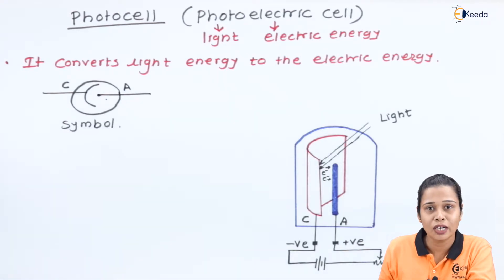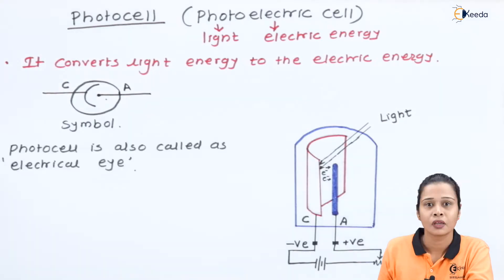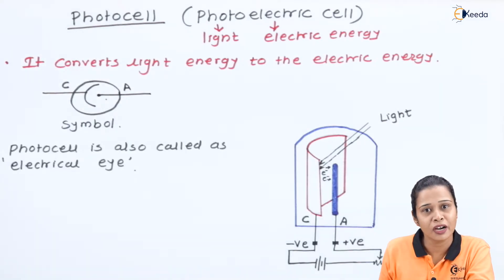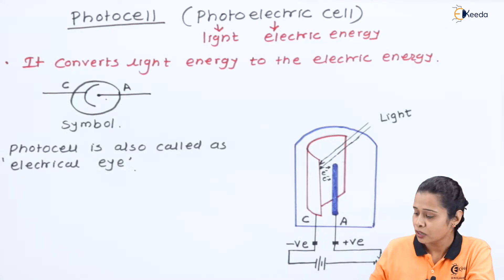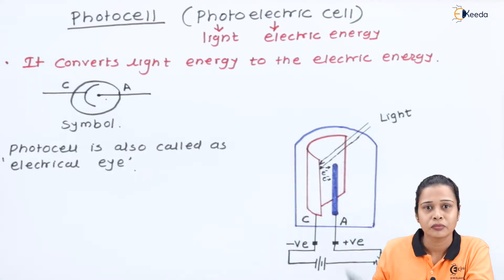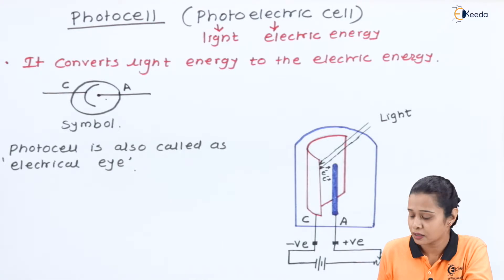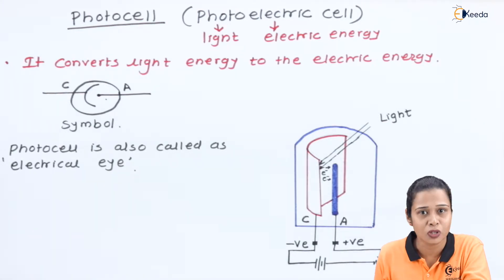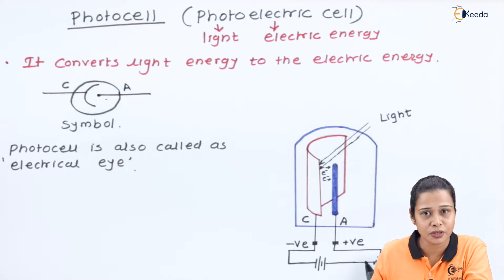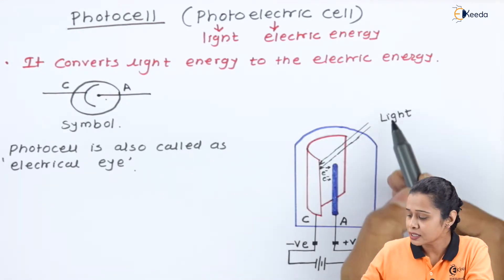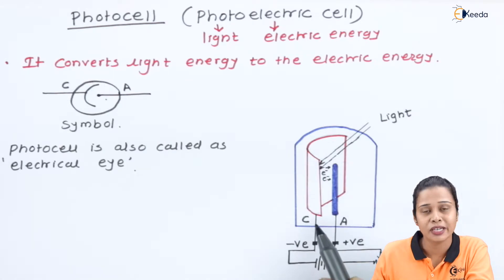It is also called the electrical eye. Let us see the construction part of the photocell. It consists of a cathode, which is a metal plate, and an anode, which is made up of a platinum rod. The cathode is at the negative potential and the anode is at the positive potential.